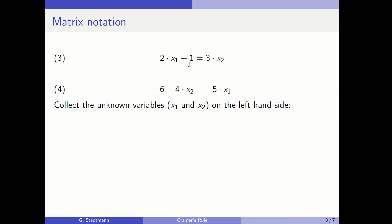So we have to put this 1 on the right hand side and the 3x2 on the left hand side. The 1 will appear with a positive sign on the right hand side and the 3x2 on the left hand side with a negative sign.